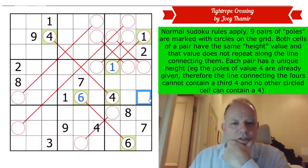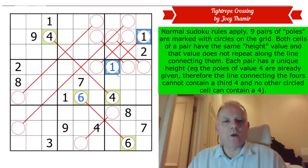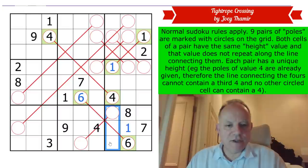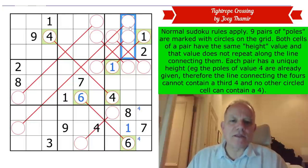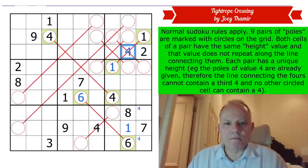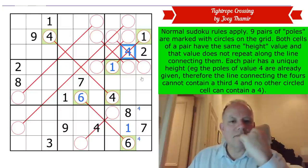We've got a one there and a one there, so we can place one just doing a bit of sudoku. Four can't be there, so it's in one of those cells. Four is up here, and remember this rule that four can't be in another circle, so the four in column eight has to be here.